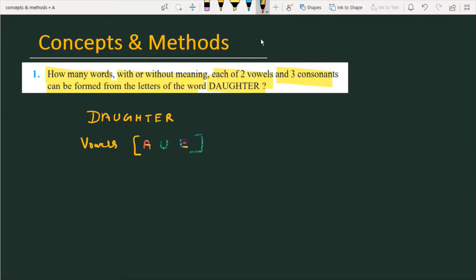So there are three vowels here. Similarly, if I talk about consonants, the consonants for the given question are D, G, H, T, and R. So in this particular question there are three vowels and five consonants.